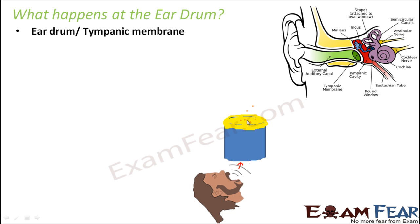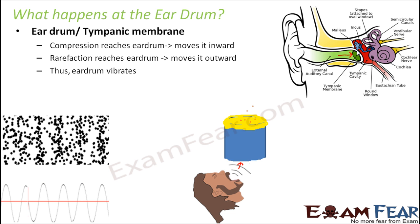A similar thing happens in case of the eardrum also. When the sound waves reach the eardrum, the eardrum starts to vibrate. Now, due to the vibration of the eardrum, compressions and rarefactions happen. Compressions are the dense areas; rarefactions are the less dense areas. Again compressions are more dense areas and rarefactions are less dense areas. This wave-like structure is being formed — that is how you get the sound waves, and that is how your ear perceives the sound waves.